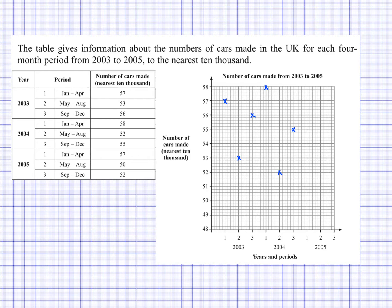Then I'm on to 2005, with three seasons. First season is 57. Second season is 50. Third season is 52. Once you've plotted these points, you join them with straight lines — from the first value to the second value, and so on.